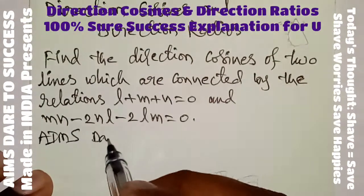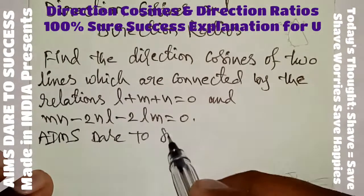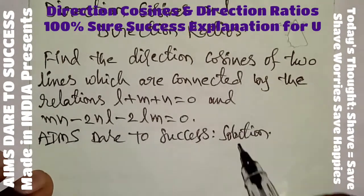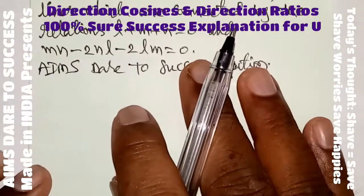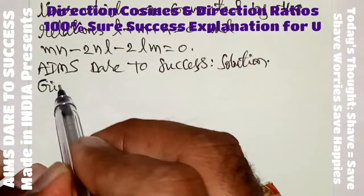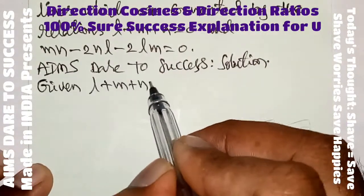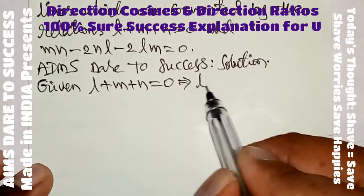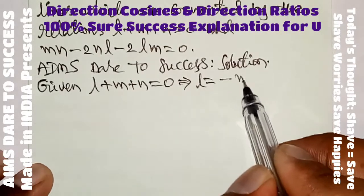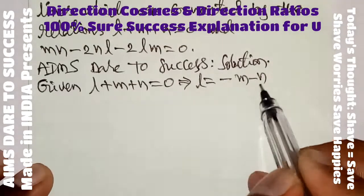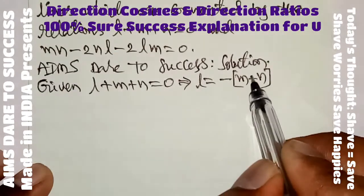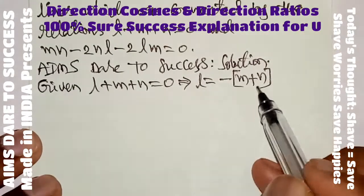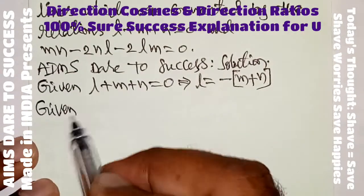Now I want to write the solution. From the first equation, l plus m plus n equals 0, I take the l value to one side: l equals minus of (m plus n). This l value I want to substitute into the second equation.